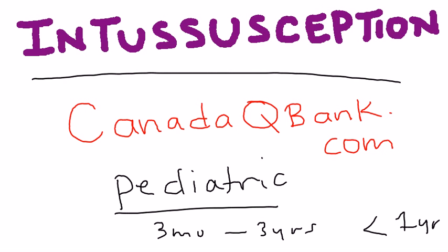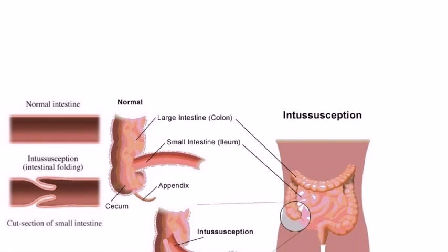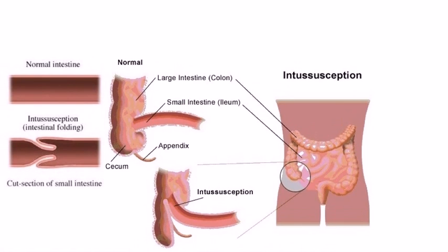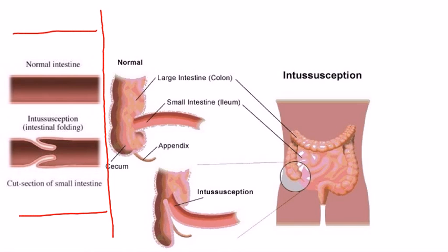So what is it? Let's look at this diagram. Here you have a normal intestine — completely patent, no problems. Then you have intussusception. What's happening is that one part of the intestine goes into another part. It's referred to as telescoping, where one portion of the intestine telescopes into an adjacent segment, as you can clearly see there.